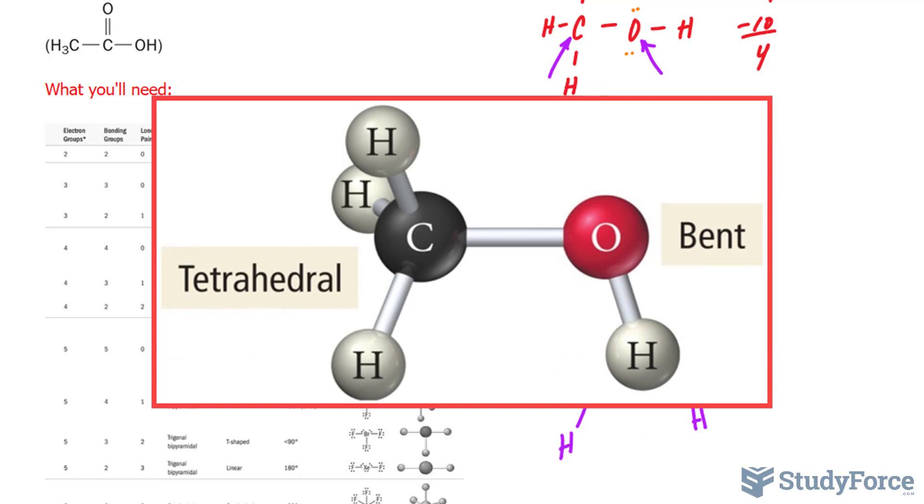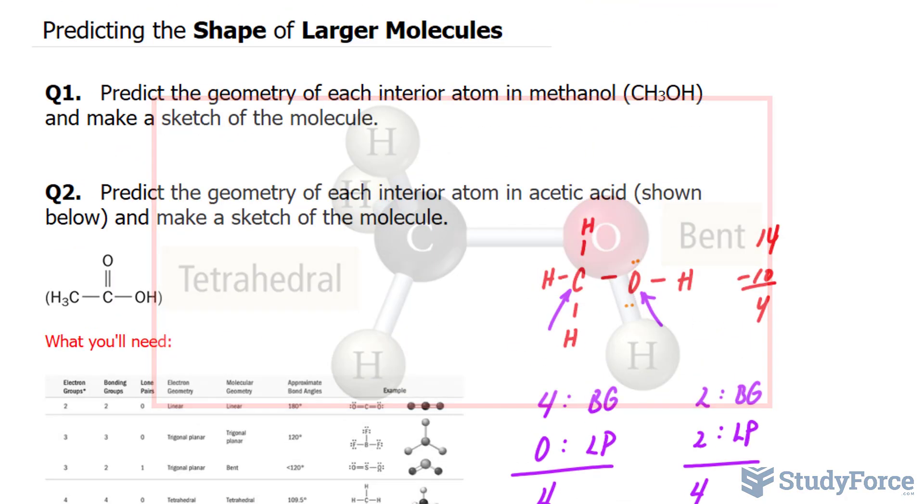A more accurate illustration is now shown on your screen. Let's move on to question number two. Predict the geometry of each interior atom in acetic acid, and that's shown below, and make a sketch.